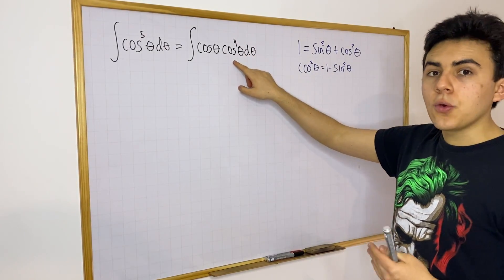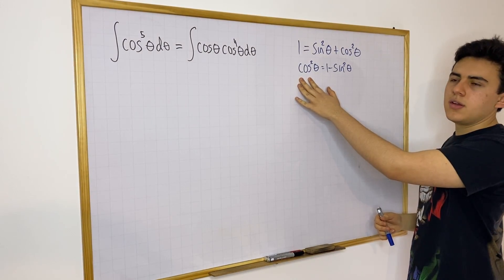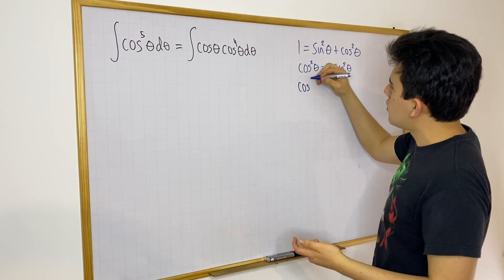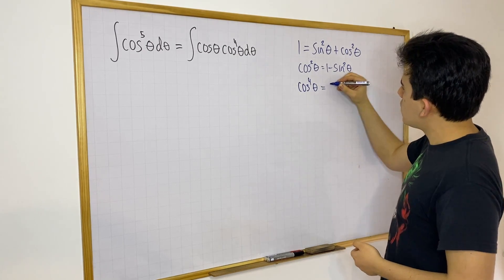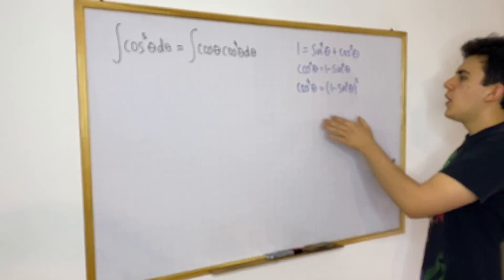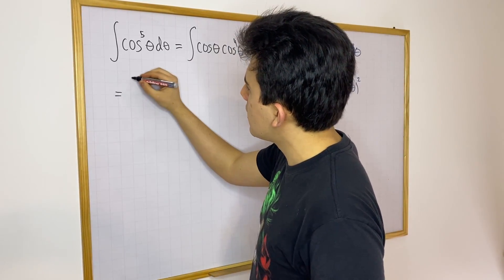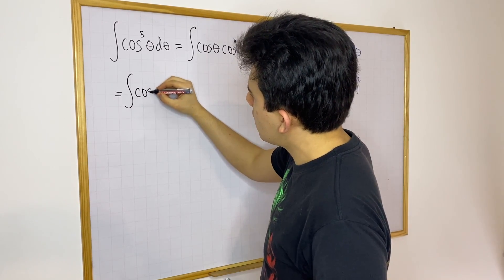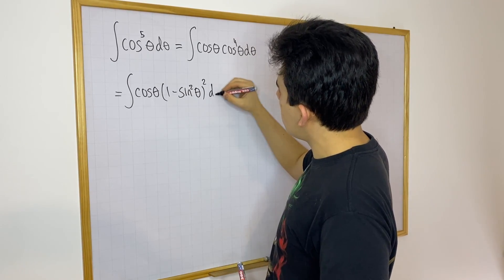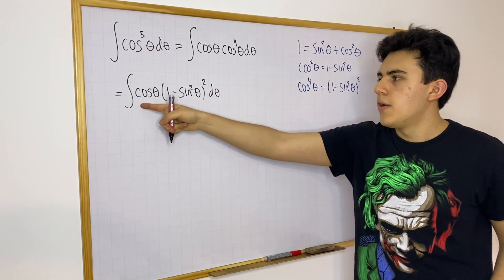We can rewrite cosine to the fourth power in a very nice form that will allow us to use substitution. Over here we have cosine squared, and if we want to get to cosine to the fourth power, we can just square this entire thing. So cosine to the fourth power is going to be equal to (1 minus sine squared theta) squared. We can now write the integral as cosine theta times (1 minus sine squared theta) squared d theta.